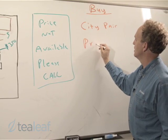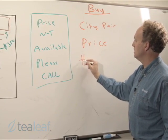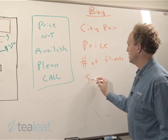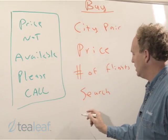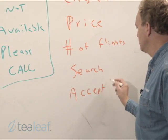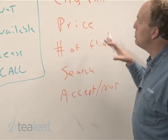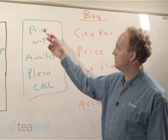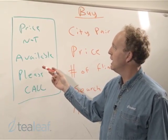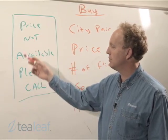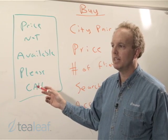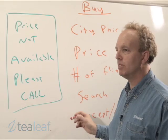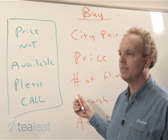Within my buy page, we'll want to look at things by city pair, price, number of flights offered, number of search terms, and whether they accepted or not. Every business will have a set of structured criteria to analyze user experience. With T-Leaf, I was able to see that a user had a poor experience. I can measure and quantify that impact by searching and finding all users who received that same message, understanding when the problem started, when it ended, or if it's still going on. I can also measure the impact against conversion ratios and normal metrics I use to run the site.